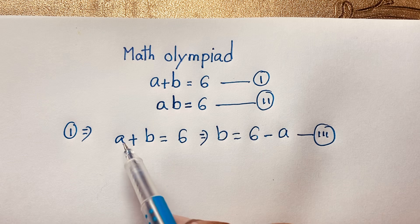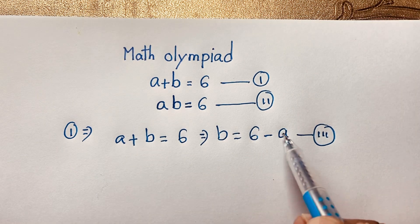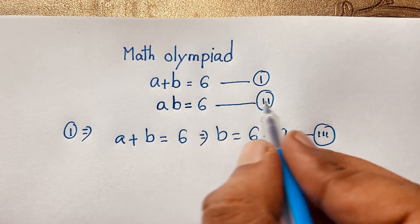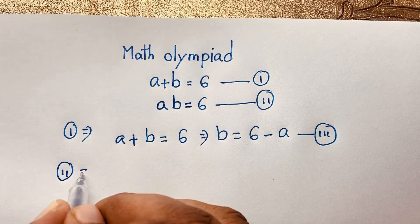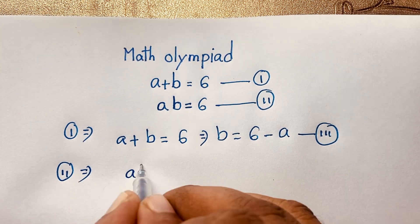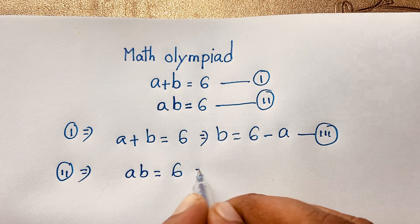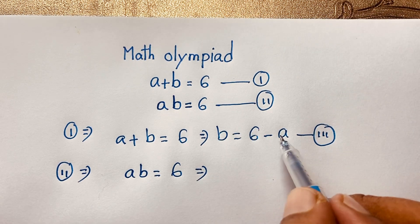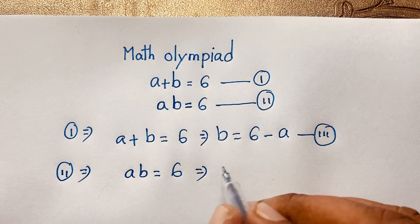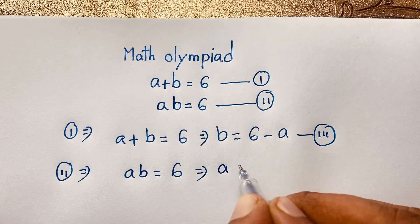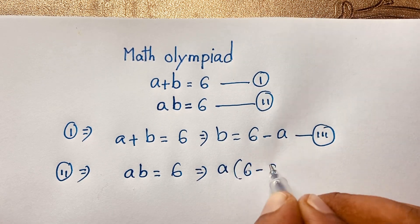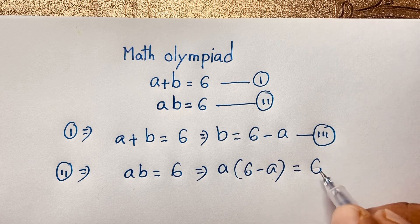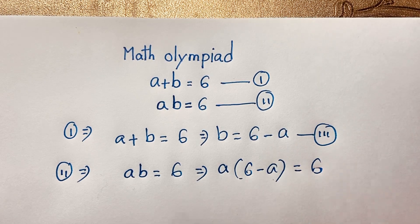Now, I can see our second equation: A times B is equal to 6. We know that B is equal to 6 minus A, so I substitute this value into this equation. It will be A times (6 minus A) is equal to 6. I just put this value into this equation.